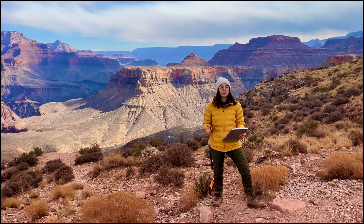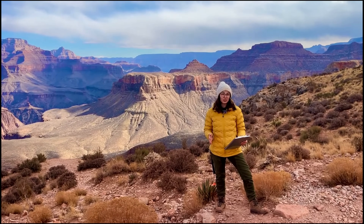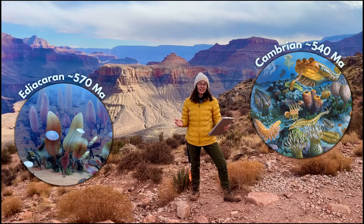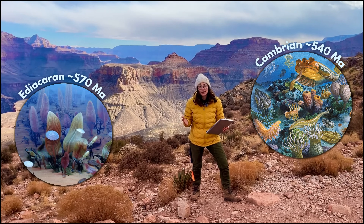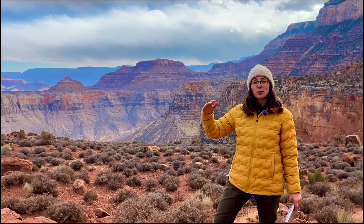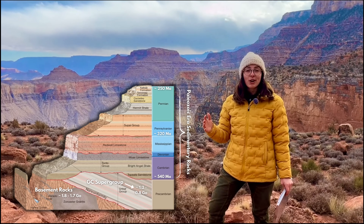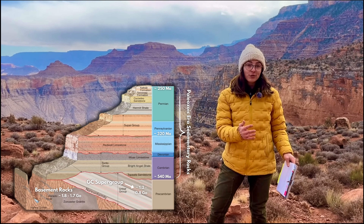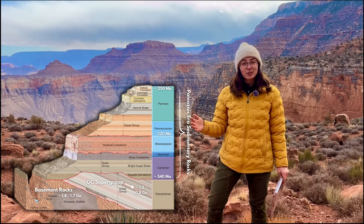The Grand Canyon Supergroup of rocks represents an incredible time in Earth's history, when oxygen levels were rising leading up to Snowball Earth — a period in which Earth became nearly completely covered in ice. This was immediately followed by the Ediacaran and Cambrian explosions of the first animal life on Earth. The very next set of rocks lying on top of this supergroup in many places in the canyon are sedimentary rocks from the Paleozoic era, spanning from around 540 to around 250 million years ago.